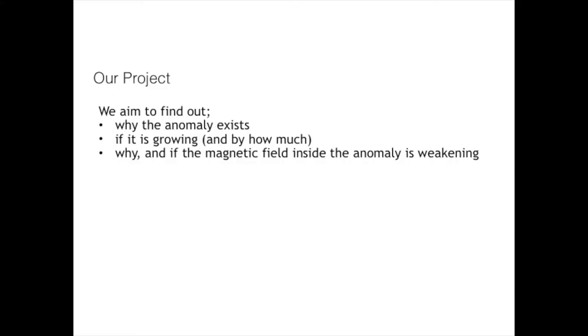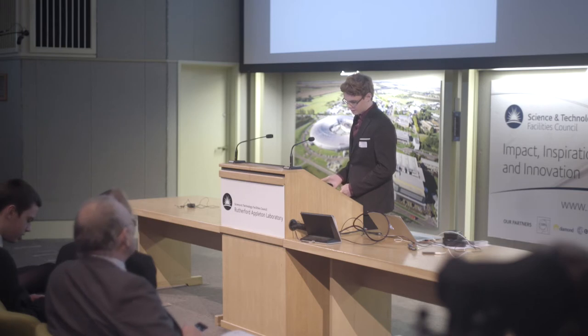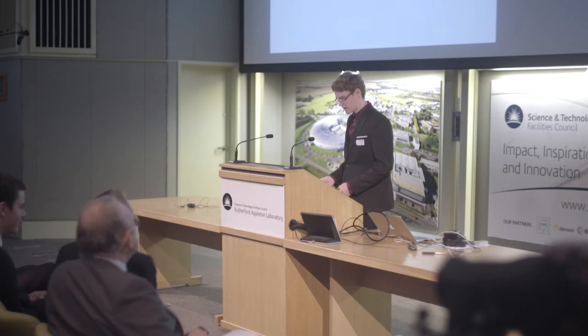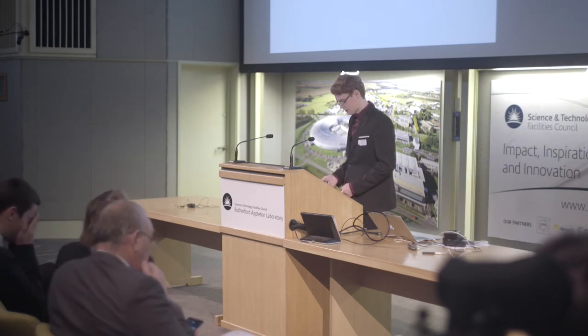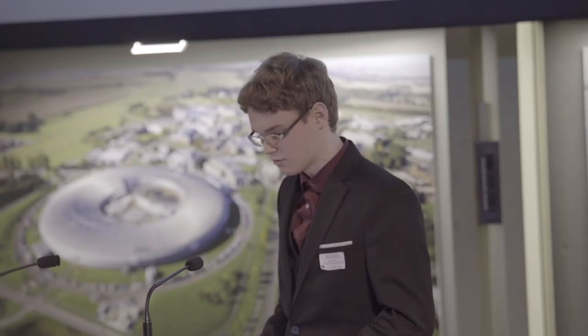What we aim to find out during our project is why this anomaly actually exists. Our current theory relates to the Van Allen Belt, which we'll explain more about in a moment. We're also going to find out if it's growing, by collecting data around the borders of the anomaly over time to see if radiation in this area is increasing, which would indicate the local magnetic field is weakening. We'll also look at areas inside the anomaly to see if the central strength is decreasing.